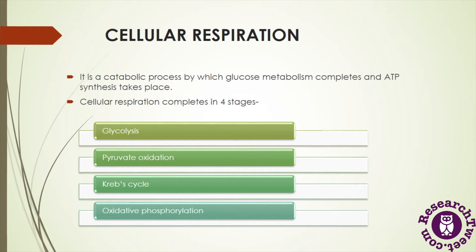Among all of these, glycolysis occurs in the cytosol of the cell, and the rest all three complete in the mitochondria. The process starts from glycolysis, in which the glucose molecule breaks down into two molecules of pyruvate. Then this pyruvic acid undergoes oxidation and converts into acetyl coenzyme A, which then takes part in the citric acid cycle or Krebs cycle.